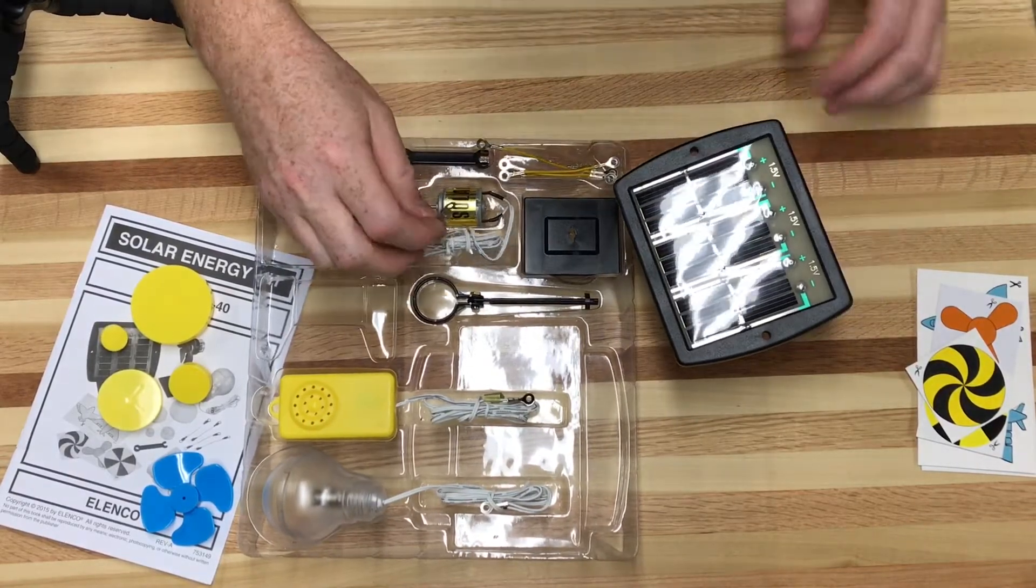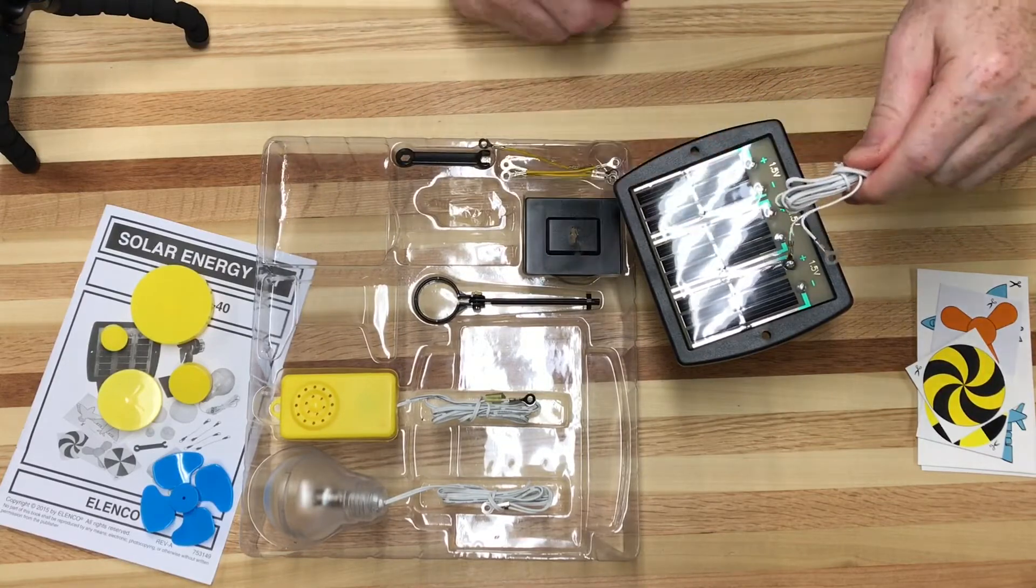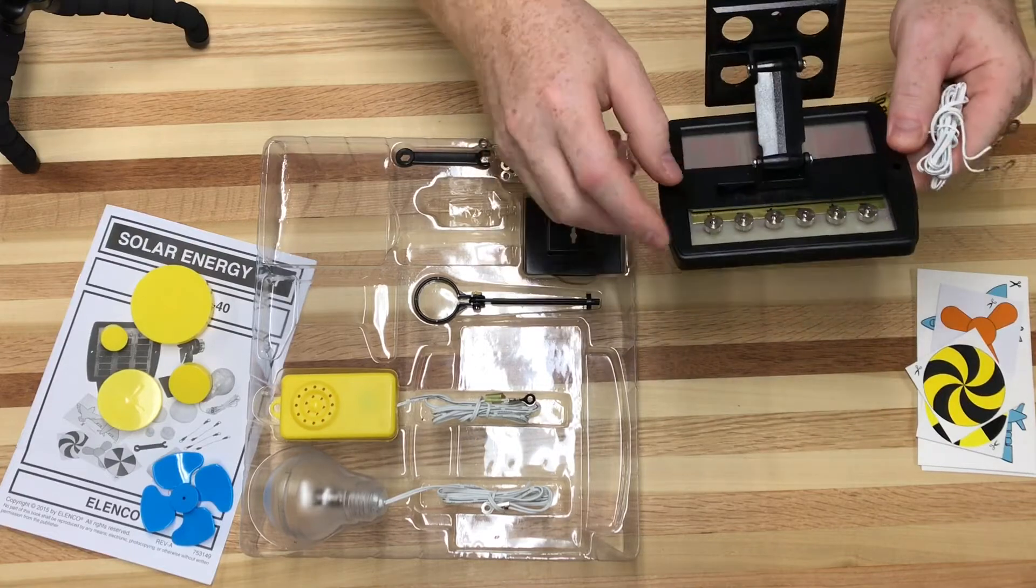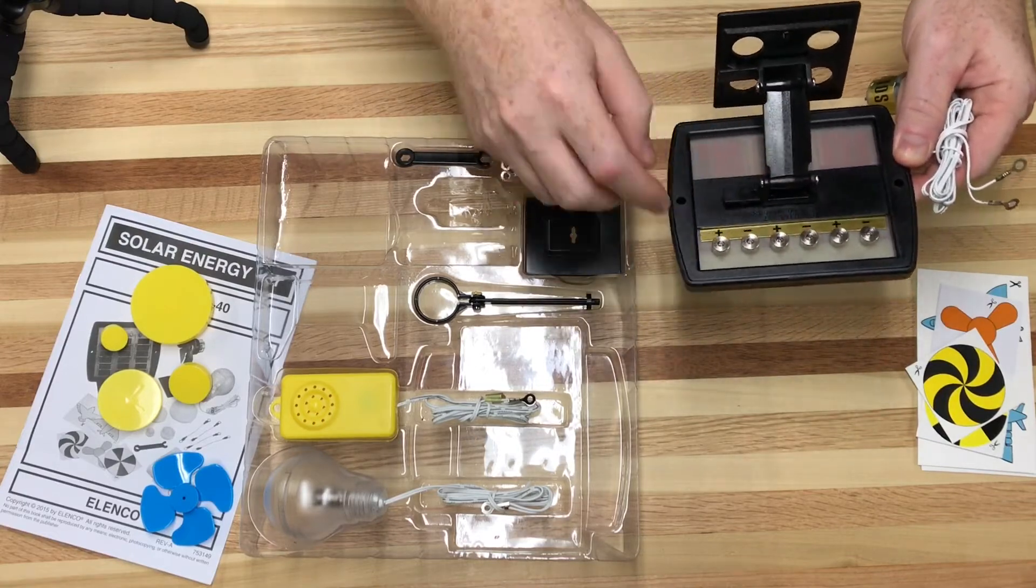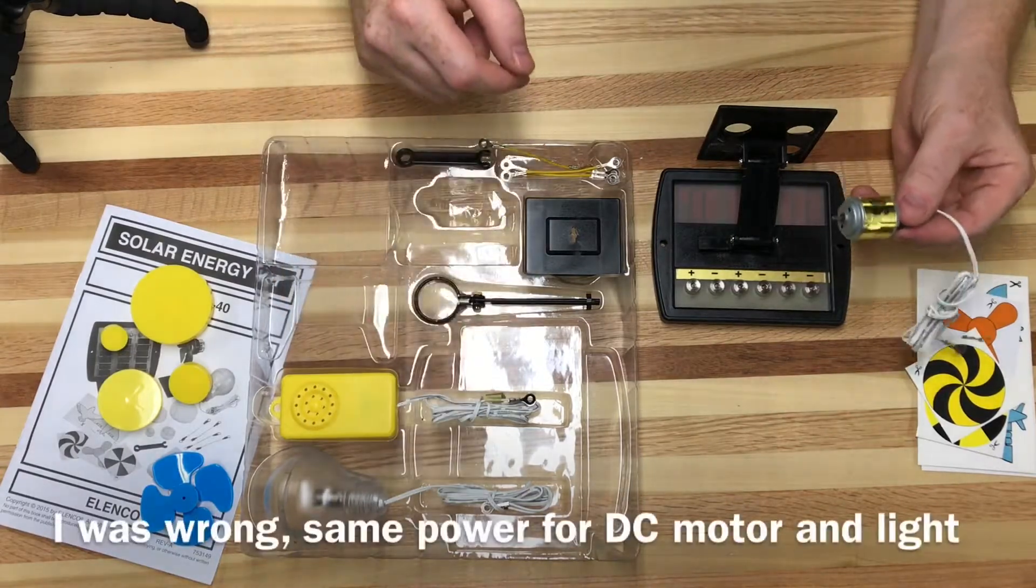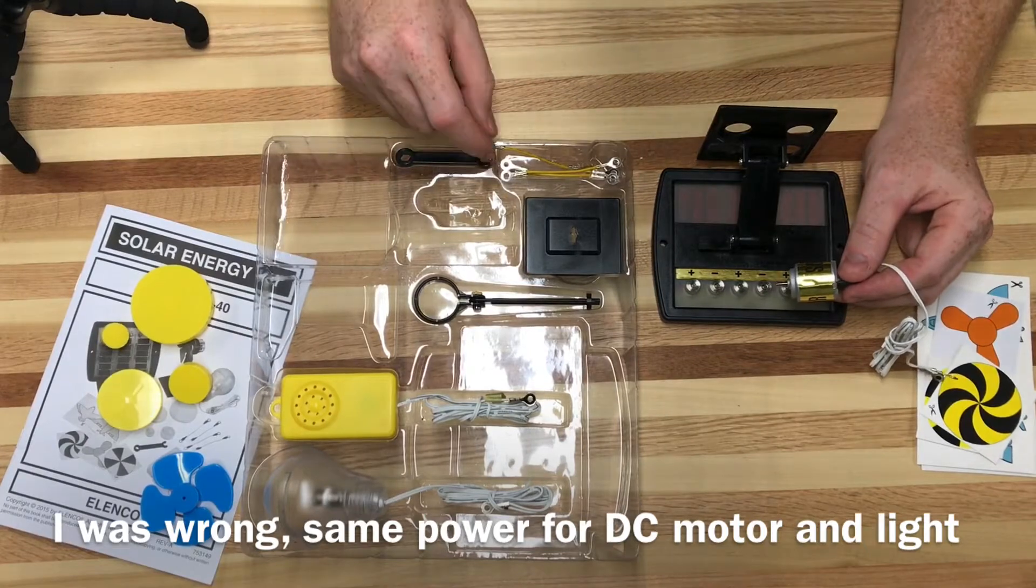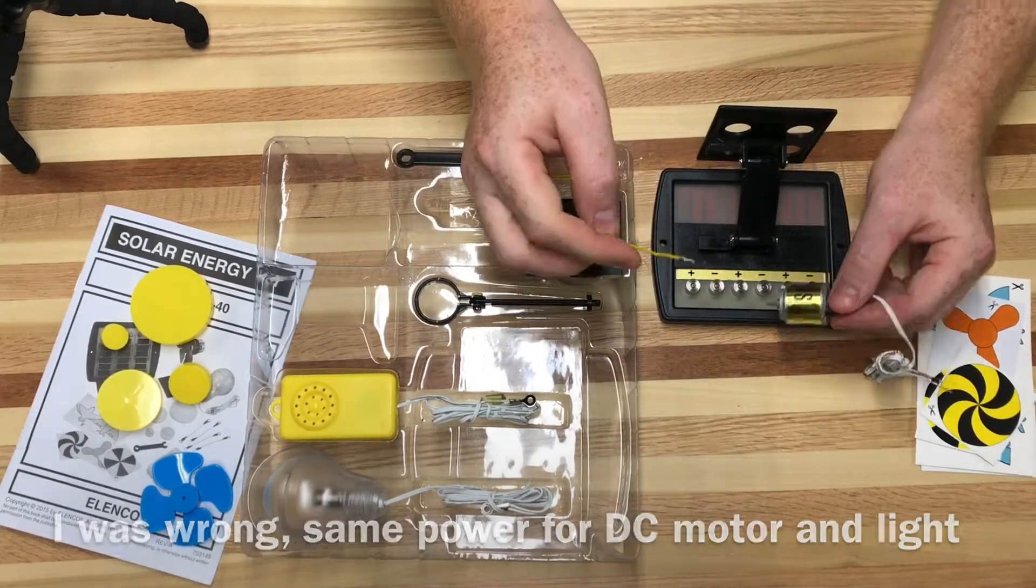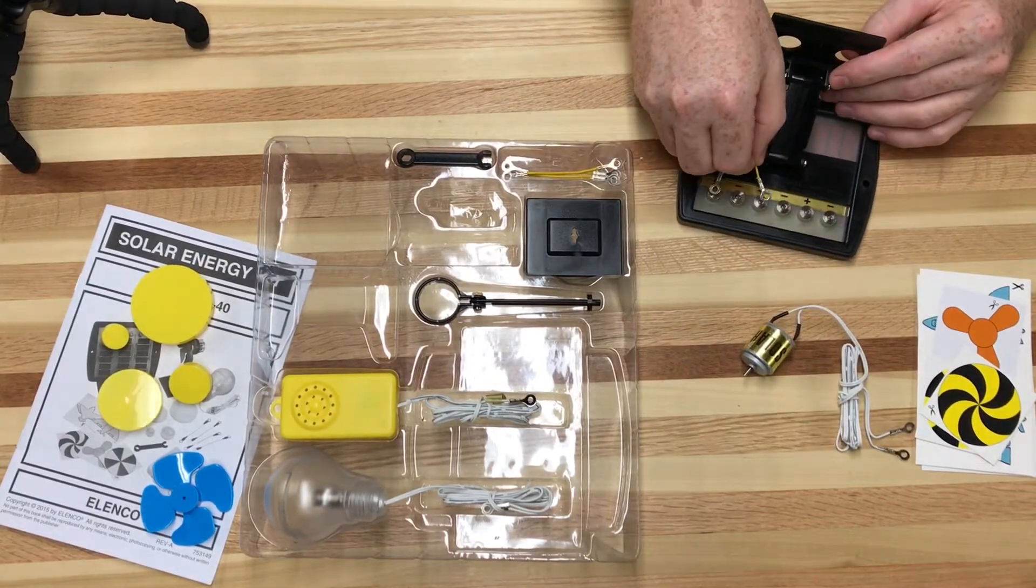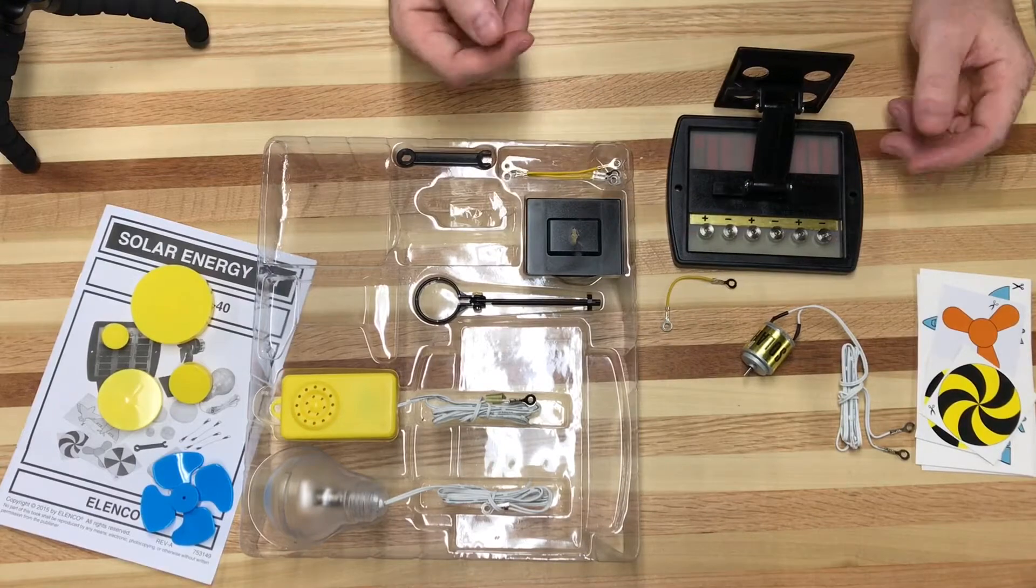You'll notice all of the connectors have these ring connectors on the ends. Those are simplistically enough attached to these posts on the back which are all labeled positive and negative. Depending on what you're trying to do, like the light draws less power I imagine than the motor. The motor probably draws more power than this simple buzzer. With these jumper cables you can jump power from one panel to the next panel to either work in series or parallel, and you can discuss that with your students.